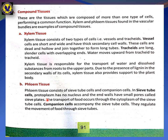The end walls have small pores called sieve plates. The transport of food occurs through the cytoplasm of the sieve tube cells. Companion cells accompany the sieve tube cells and regulate the movement of food through them. So phloem transports food.